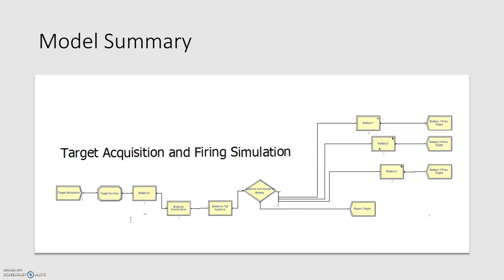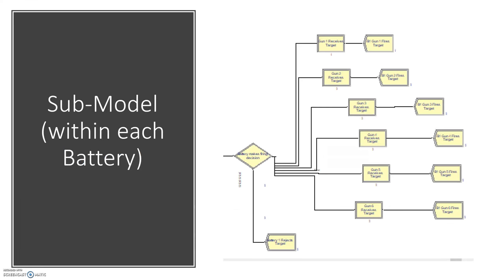To give you an idea of what our general simulation looks like, this showcases the simulation all the way from target generation by the infantry unit down to when the target is fired upon by a gun under the battery unit. This is a submodel showing what occurs within each battery unit — from when it's accepted or rejected to the guns that receive the target and when it's fired upon.